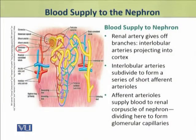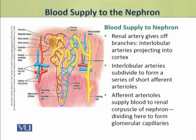Now we shall discuss the blood supply to the nephron. First, we shall discuss the afferent pathway. The renal artery, which supplies blood to the kidney, gives off branches called the interlobular arteries, which project into the cortex. These interlobular arteries subdivide further to form a series of short afferent arterioles.